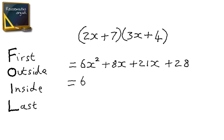And then to simplify, we have 6x squared. 8x plus 21x is 29x, and then plus 28. So that is how to multiply or expand double brackets.